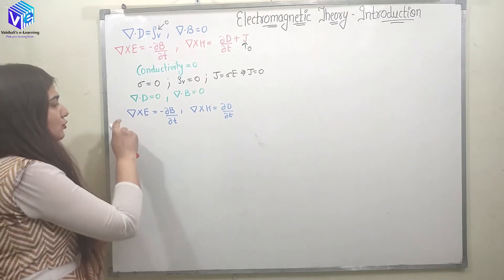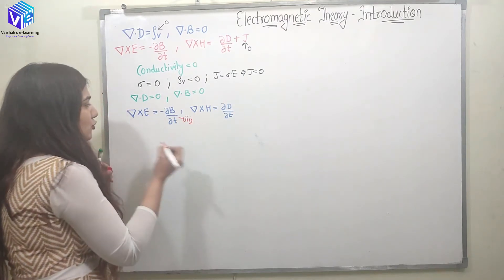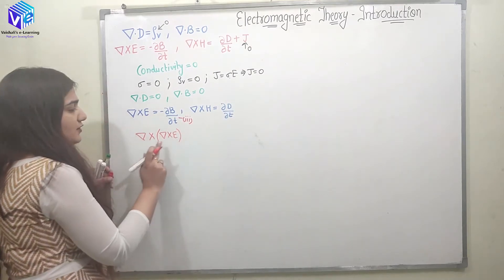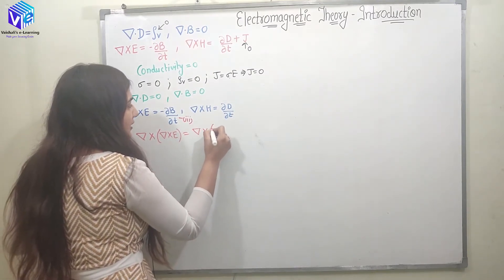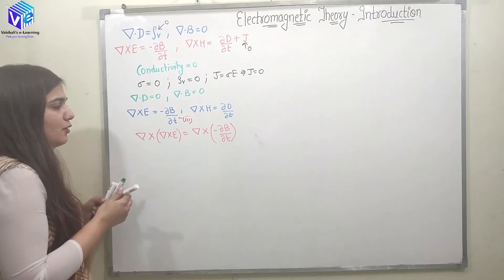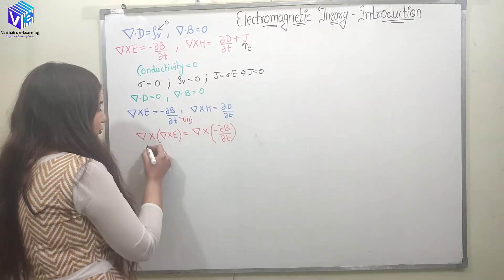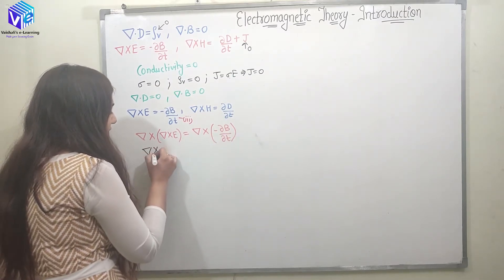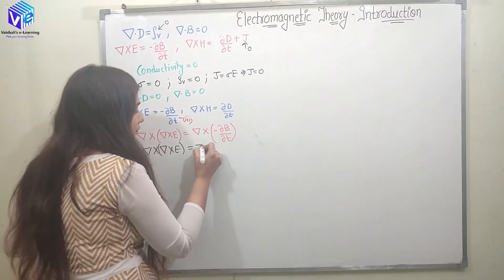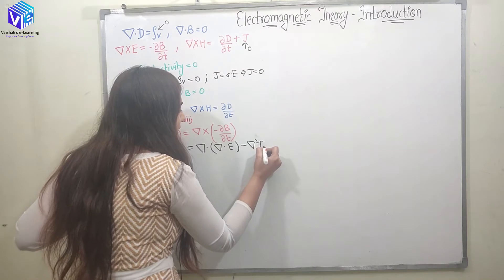Now, what I am going to do is take the curl of equation number 3. So I am going to take the curl of ∇×E. On the left-hand side I will have ∇×(∇×E), and on the right-hand side I will have ∇×(−∂B/∂t). Now I can take the ∇× inside and take ∂/∂t outside. I know the identity: ∇×(∇×E) = ∇(∇·E) − ∇²E.